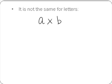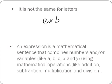However, this is not the same for letters. What we are going to look at is what we get when we multiply a by b. The first thing we need to know is that a multiplied by b is an expression. An expression is a mathematical sentence that combines numbers and or variables using mathematical operations. In this case, a multiplied by b is an expression because it combines the variables a and b using the mathematical operation multiplication.